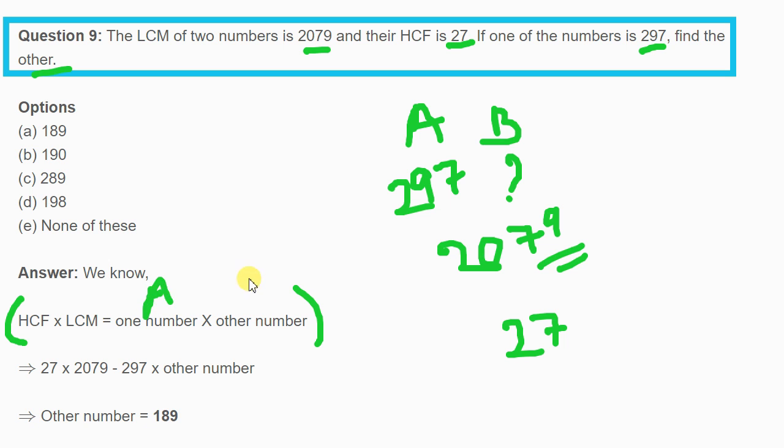The formula is LCM times HCF equals A times B. So we can calculate that the other number equals LCM times HCF divided by the first number.